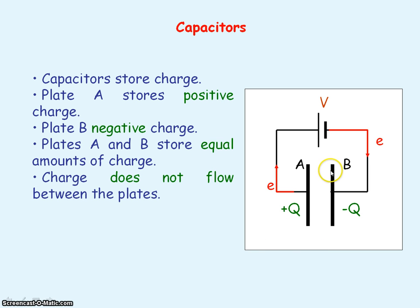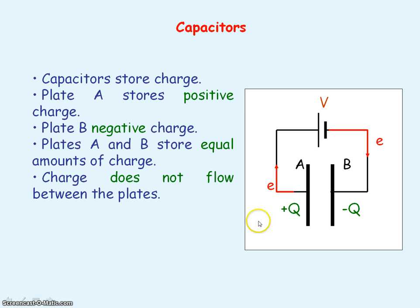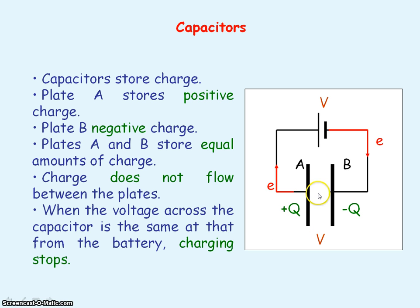No charge will flow between plates A and B, and that's because of the insulating dielectric material between the plates. The capacitor will stop charging when its voltage is the same as the voltage across the battery.